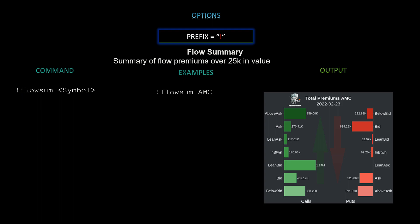Next we have flow summary — a summary of flow premiums over $25,000 in value. The command is `!flowsum [symbol]`. In this example we used AMC, and it prints out a nice visualization of calls and puts with the premiums paid for each side.